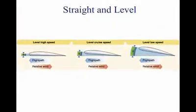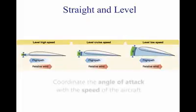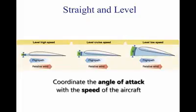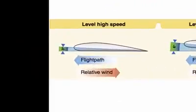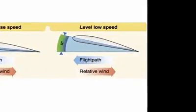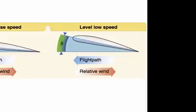A pilot may hold an aircraft in straight and level flight at many different airspeeds. The pilot needs to coordinate the angle of attack with the speed of the aircraft. For example, if the plane is flying at a high rate of speed, the angle of attack can be relatively low. However, if the rate of speed is low, then the pilot must have a higher angle of attack. This is caused by the amount of lift produced by the wings of the aircraft.